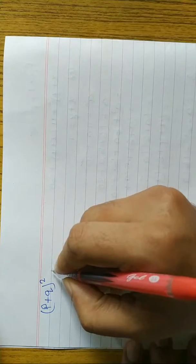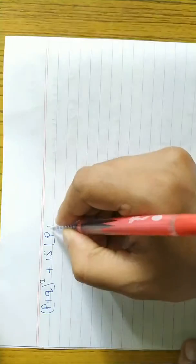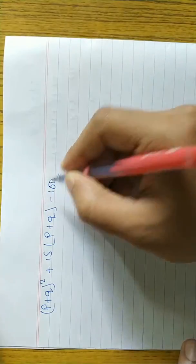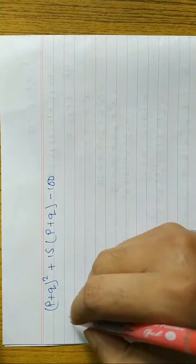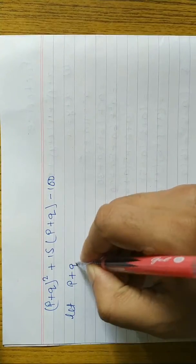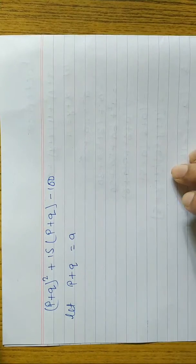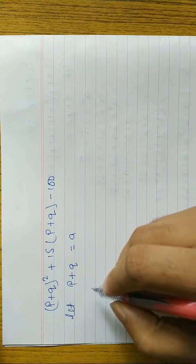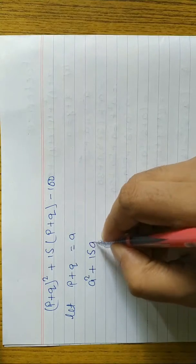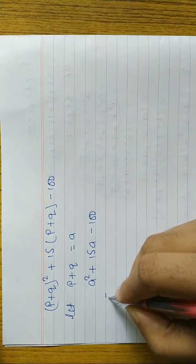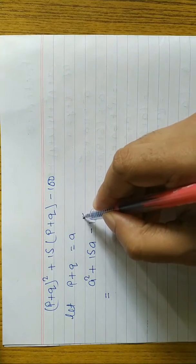Next question: (p + q)² + 15(p + q) - 100. Using the same process, we let p + q equal to a. In place of (p + q)², we write a², plus 15, in place of (p + q) we write a, minus 100.